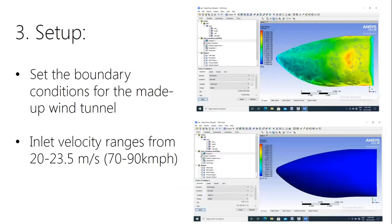The third step is setup — a virtual wind tunnel is created around the nose cone, and inlet velocity values are assigned. We chose 20 to 23 meters per second (70 to 90 km/h) because Formula Student tracks consist mostly of corners — hairpins, U-turns, 90-degree turns — with very few straights. Therefore, cars rarely reach top speeds of 120–130 km/h, and the average speed is around 70 to 90 km/h.